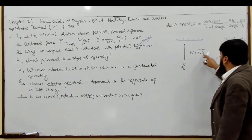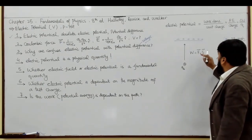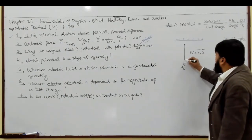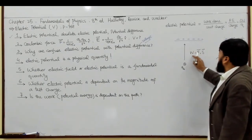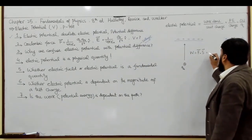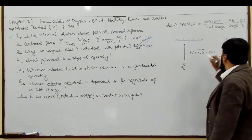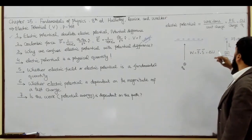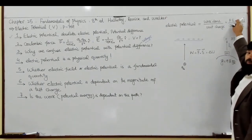So F·S — the work done is force times displacement — the same as in the gravitational analogy where F = mg and distance is h. Here the same principle applies: work equals F·S.